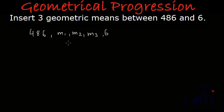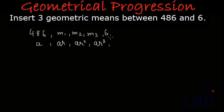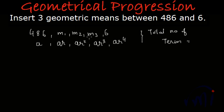For this to be called geometric means, if we call the first term 'a', then m1 will be written as ar, m2 as ar², m3 as ar³, and 6, which is the fifth term, will be written as ar⁴. The total number of terms is the number of geometric means (3) plus 2, because we have 486 as our first term and 6 as our last term — so together that makes 5 terms.